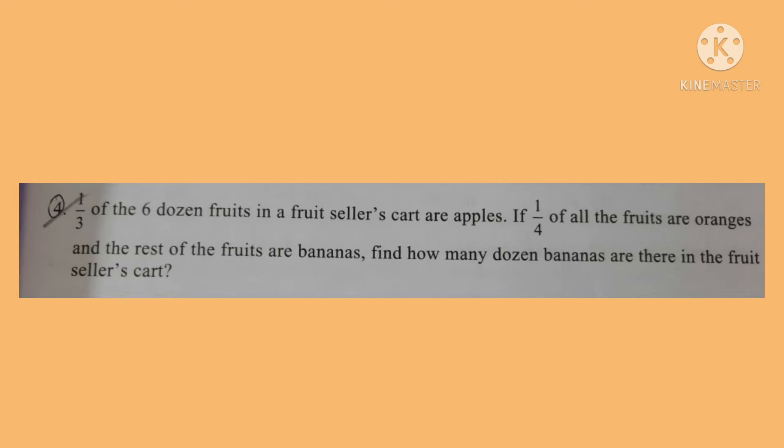The number of oranges is equal to 1 by 4 of 6 dozen fruits, and the rest of the fruits are bananas. These are the conditions given. Next, we have to find the number of bananas, and that should be in dozens. There are three conditions given, so let us write the solution.